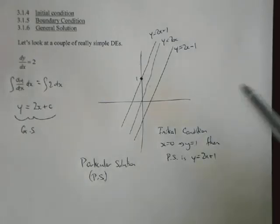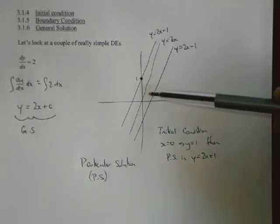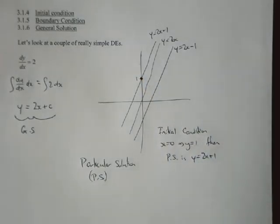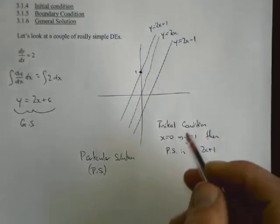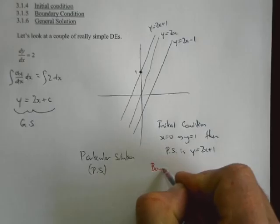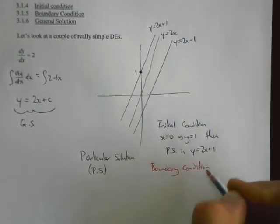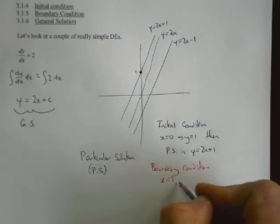And initial condition is where initial is used when the x value, or quite often the t value, is equal to 0 at the start. Boundary condition is used for any other points. So for example, we could have a boundary condition.